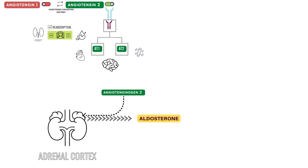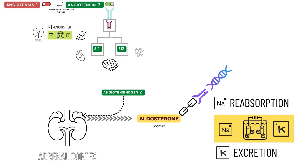In contrast to angiotensin 2, aldosterone is a steroid hormone. By attaching to nuclear receptors and changing gene transcription, it brings about change. Thus, the effects of aldosterone may take hours to days to begin, while the effects of angiotensin 2 are rapid. Sodium reabsorption and potassium excretion in the distal tubule and collecting duct of the nephron are impacted by aldosterone, causing a significant rise in blood pressure.